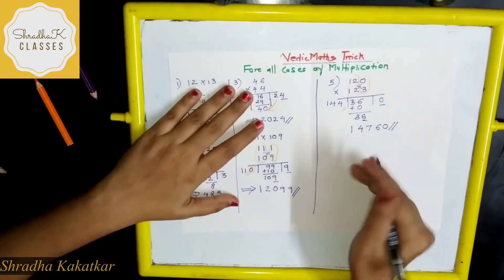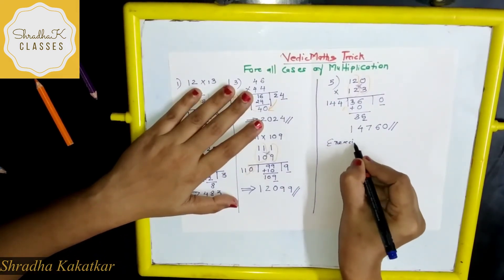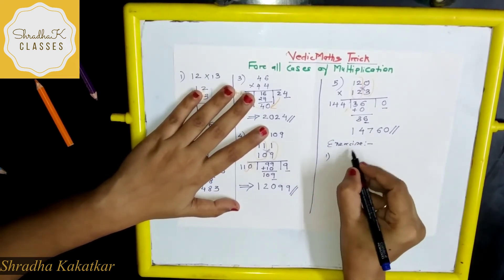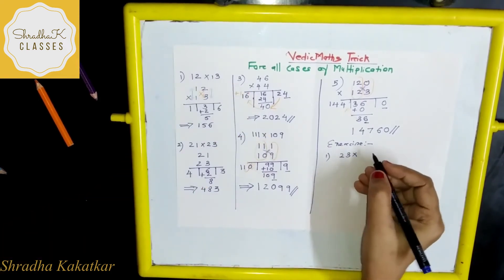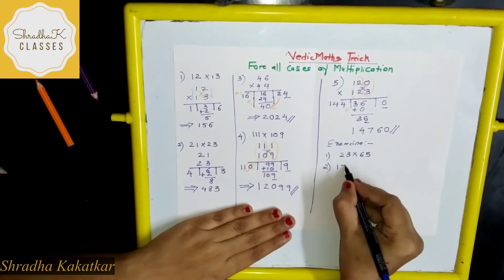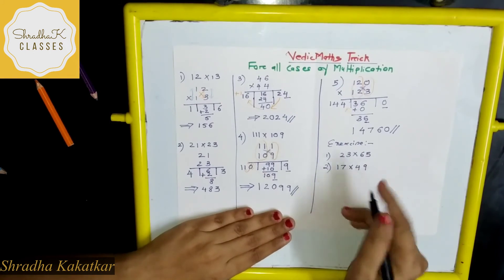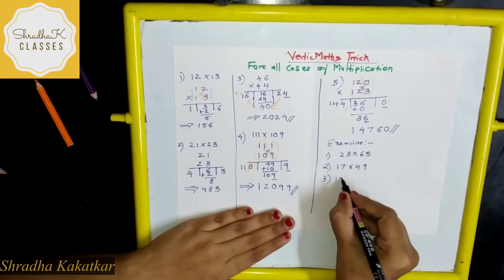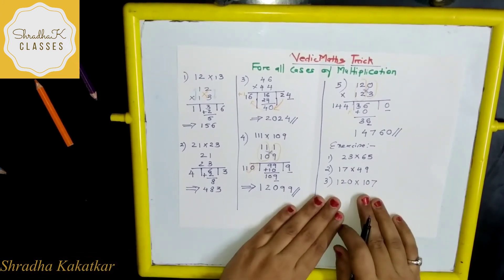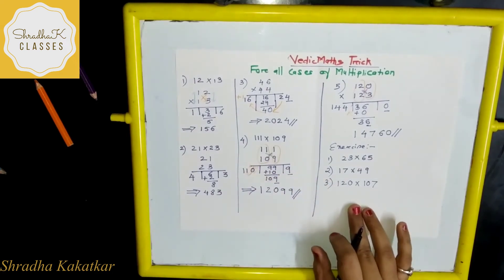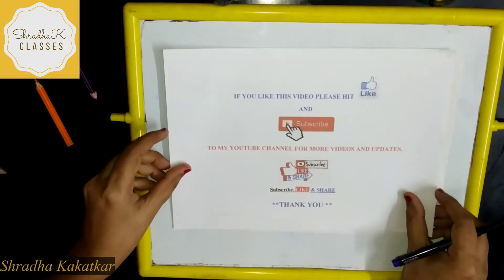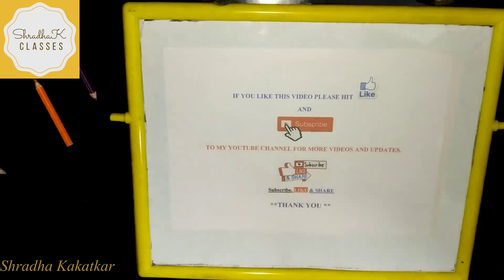Now it is exercise time. So exercise, try solving using, let me give you numbers: 23 into 65. Then take second, 17 into 49. And take one more, 120 into 107. Try solving this using this trick. If you like this video, please hit like button and subscribe to my youtube channel for more videos and updates. Thank you.